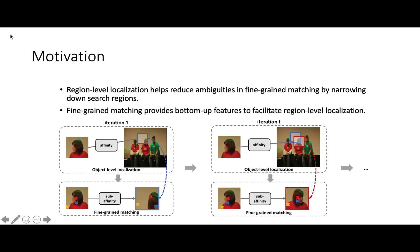The region-level localization helps reduce ambiguities in fine-grain matching by narrowing down the searching regions, while fine-grain matching provides bottom-up features to facilitate region-level localization. The two tasks are jointly trained and progressively benefit each other.